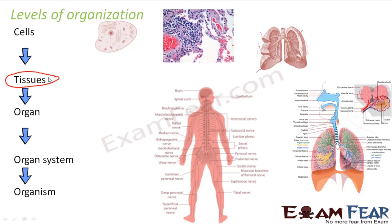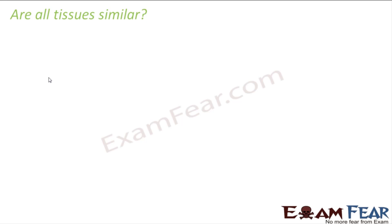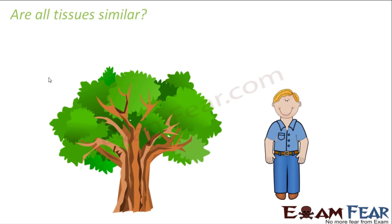In this lesson, we will be concentrating on tissues. The next question is: are all tissues similar? Whether it is an animal tissue or a plant tissue, do they all look exactly similar? Well, not exactly. Let us recall the plant cell and the animal cell discussed in our previous lesson. Do you think the plant cell and the animal cell looked exactly similar?